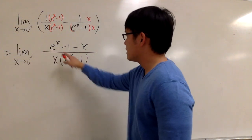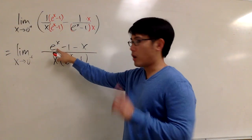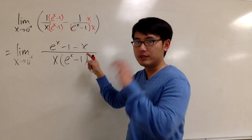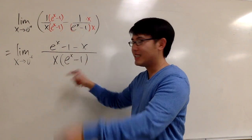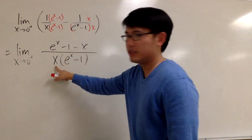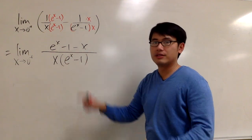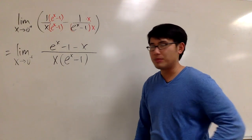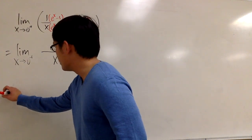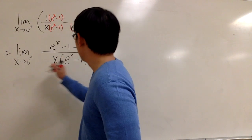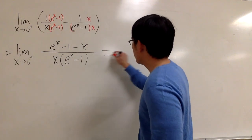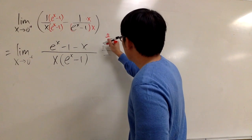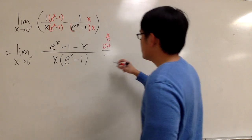Plugging 0 into all the x: on the top this is going to be 1 minus 1, which is 0, minus 0, giving 0 on top. Plugging 0 on the bottom, 0 times this is going to be 0. So we have 0 over 0 — we can use L'Hôpital's rule.